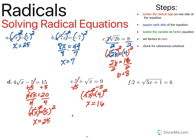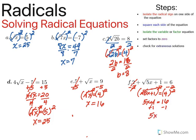Here we have two plus the square root of five x plus one equals six. We're going to begin by subtracting two on both sides to isolate the radical. What we're left with is the square root of five x plus one is equal to four. Now that the radical is by itself, we're going to square both sides. The square root and the square undo each other, so we're left with five x plus one is equal to 16, since four squared is 16. Now we subtract one on both sides to get five x equals 15, then divide both sides by five, and x equals three.